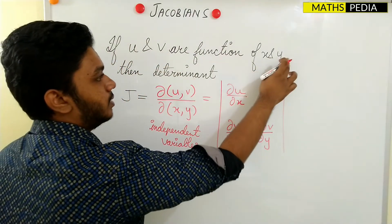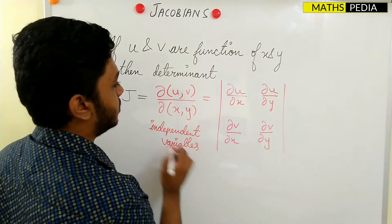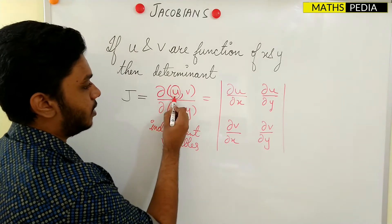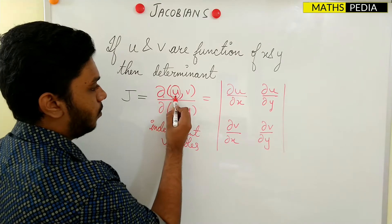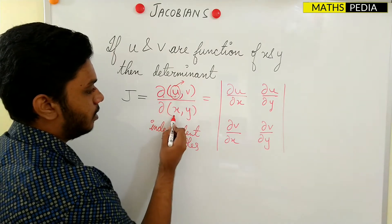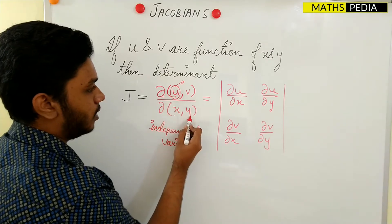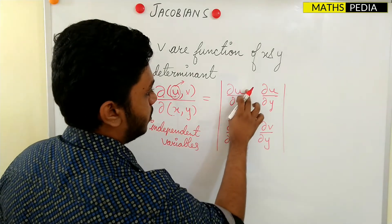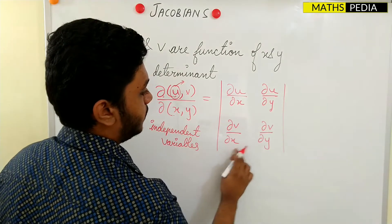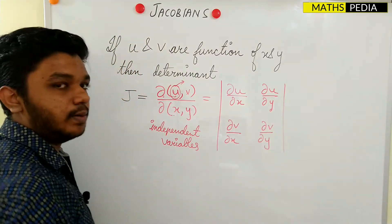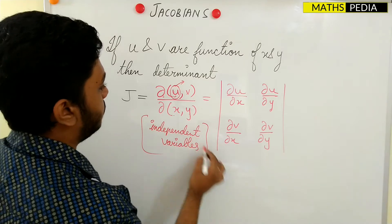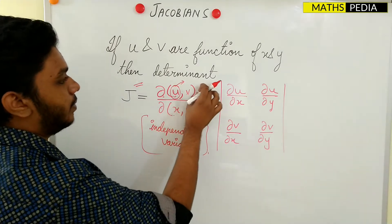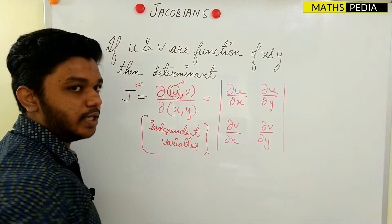To write this determinant: in the numerator part you have the dependent variables u and v, and in the denominator the independent variables x and y. The determinant is: ∂u/∂x, ∂u/∂y in the first row, and ∂v/∂x, ∂v/∂y in the second row. So the Jacobian J is the determinant of the dependent variables with respect to the independent variables.